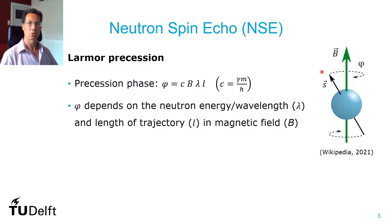Both techniques are based on the principle of Larmor precession. If you have the spin of a neutron in a magnetic field, then it starts to precess around this magnetic field. And the total phase will depend on the wavelength of the neutron, on the trajectory through the magnetic field, the length of it in the magnetic field.